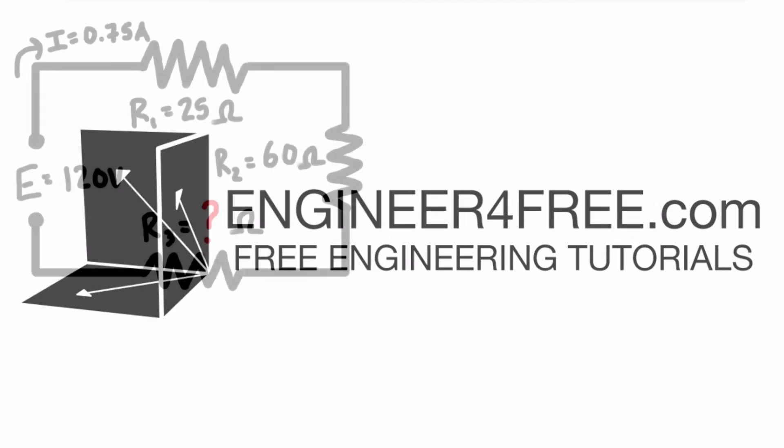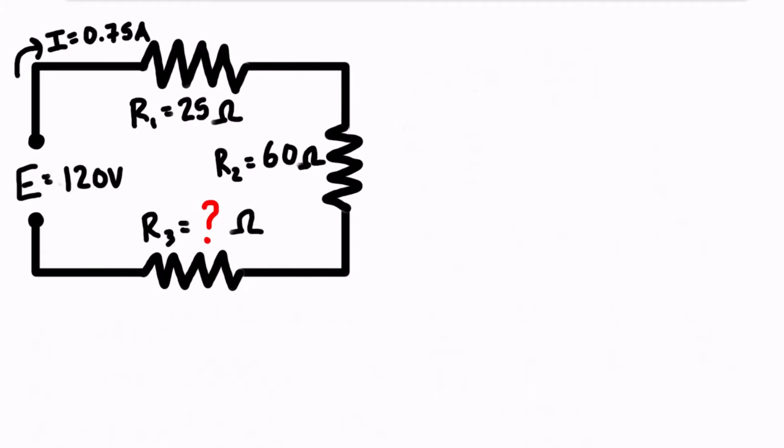Alright guys, welcome back. In this video we're running through another simple example of a series circuit where we have three resistors in series and one of them has an unknown resistance and we want to figure out what that is.